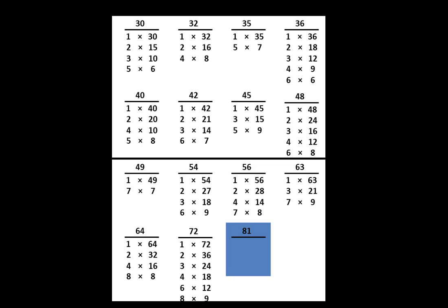On your paper, write that we can think of 81 as 1 times 81 or 3 times 27 or 9 times 9. Those are all the factor pairs of 81.